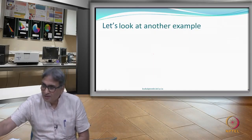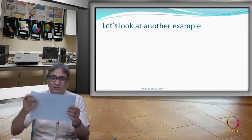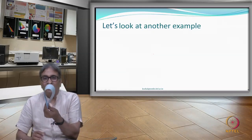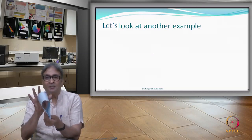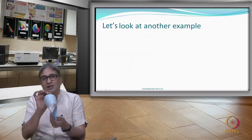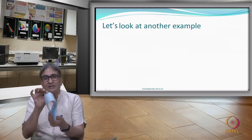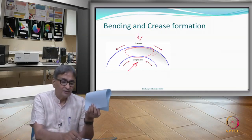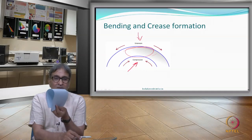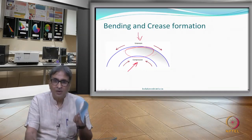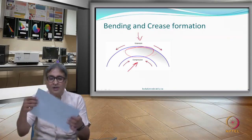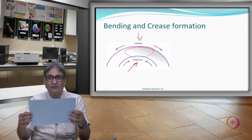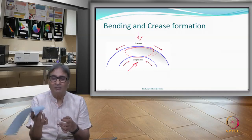Let us look at a piece of paper. This paper has been bent, and therefore there is an extension zone and a compression zone. The thickness of the paper shows both the external and internal portions. If I just leave this, it becomes the same flat paper again — it recovers. So bending is okay, but after bending it recovers. That is a different property altogether.